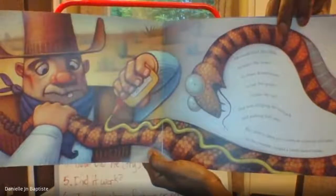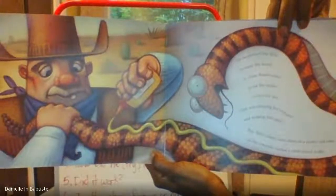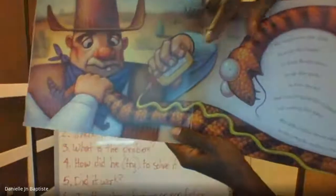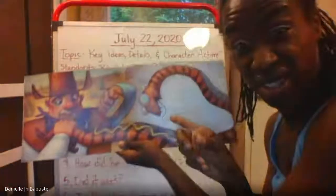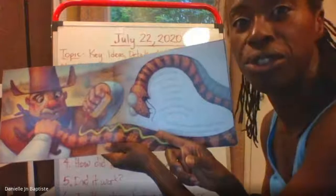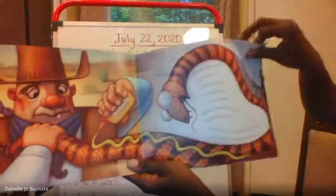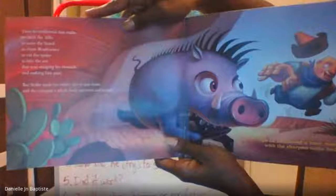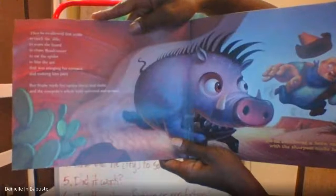But dillo's claws were sharp as a pointy old rake, so the cowpoke swallowed a rattletailed snake. Look — he put mustard on the snake, he's gonna eat it like a hot dog! Would you eat that? Would you eat a rattlesnake? What if you put mustard on it — would that make it better? Then he swallowed that snake to catch the dillo, to scare the lizard, to chase road runner, to eat the spider, to bite the ant that was stinging his stomach and making him pant.